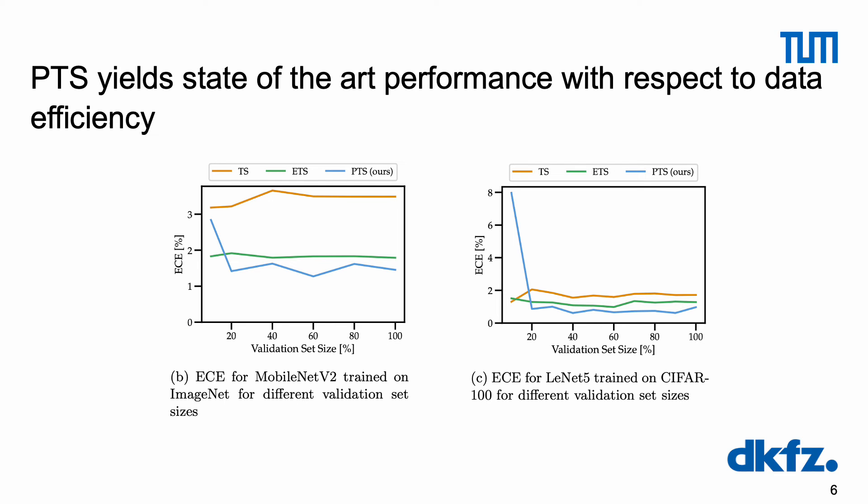Furthermore, we test for data efficiency of PTS by fitting our model on increasingly smaller subsets of the validation set to calibrate a MobileNet V2 architecture trained on ImageNet and a LiNet V architecture trained on CIFAR-100. When evaluating ECE on the test set, we found that like vanilla TS and ETS, our model yielded state-of-the-art performance even when trained on a small fraction of the validation set.